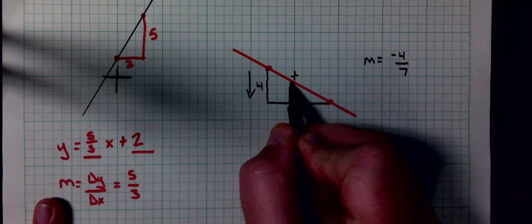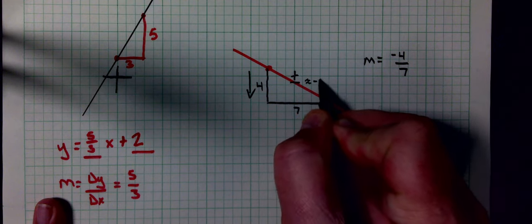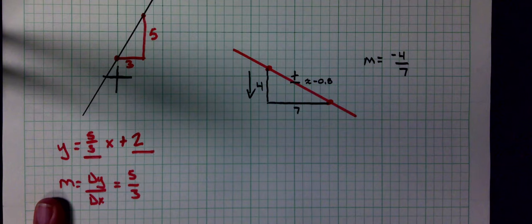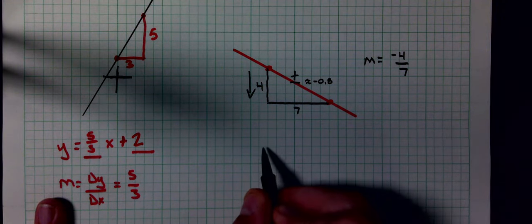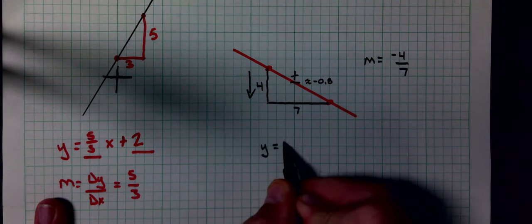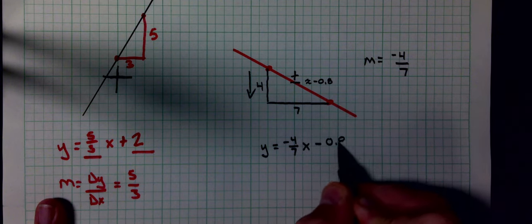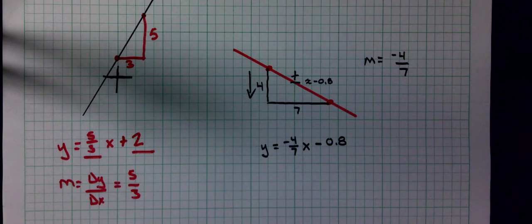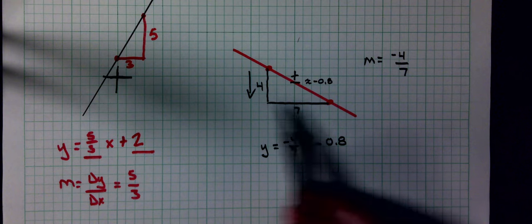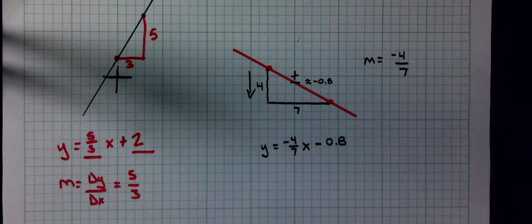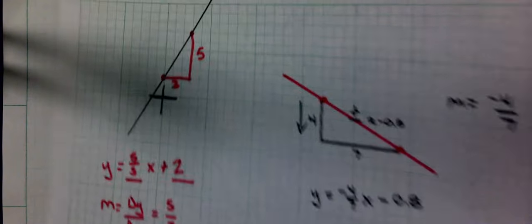My y-intercept here, approximately negative zero point two. When you're going to get them on the IXL or on paper, it's going to go through a point exactly. My equation here would be y equals negative four-sevenths x minus zero point two.